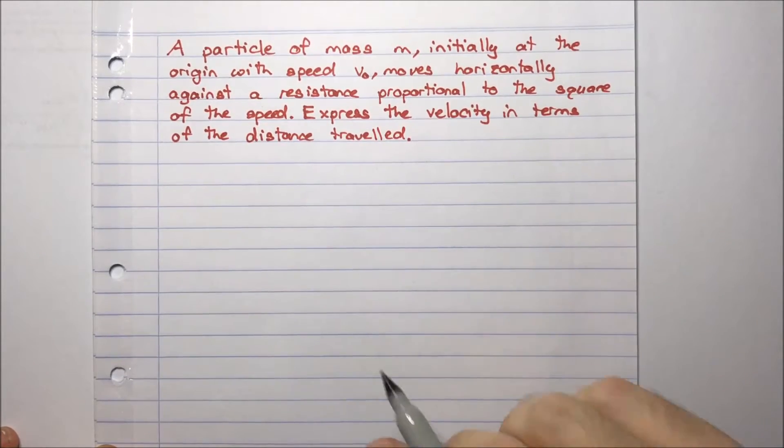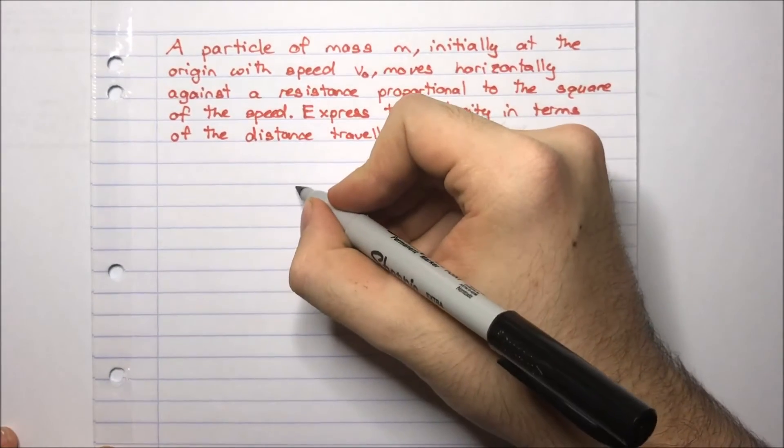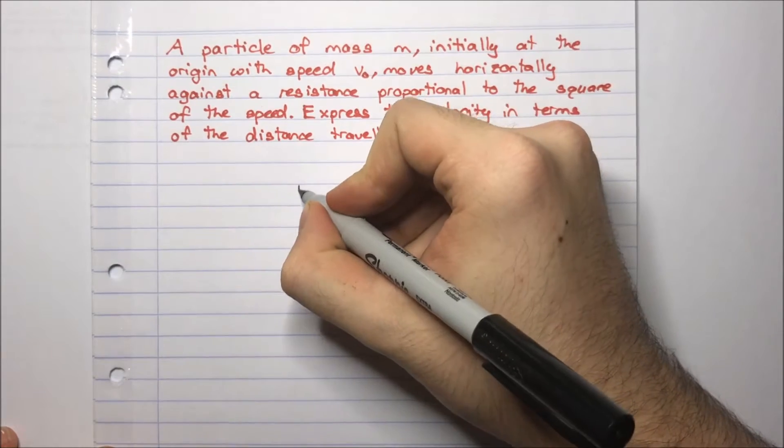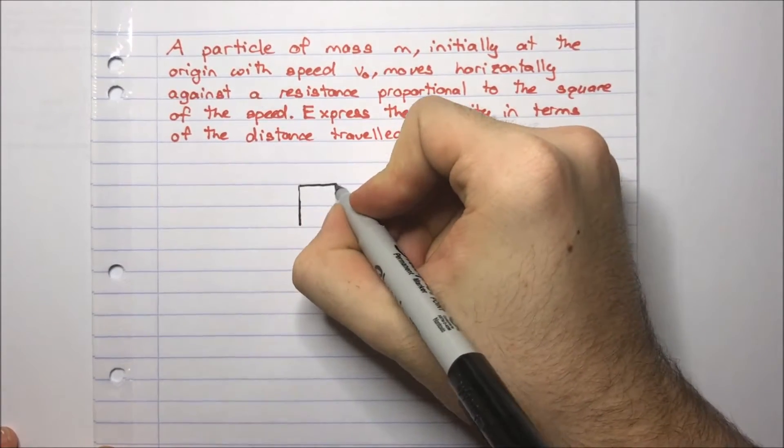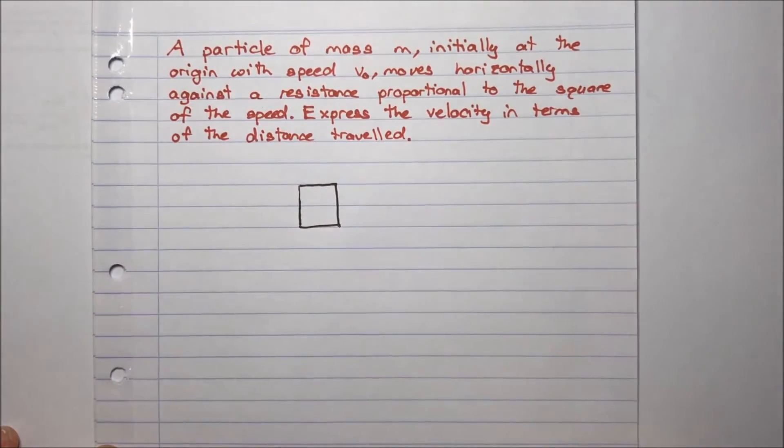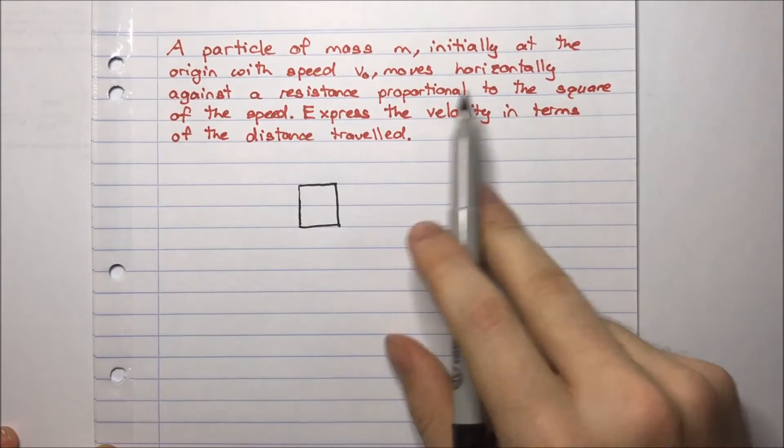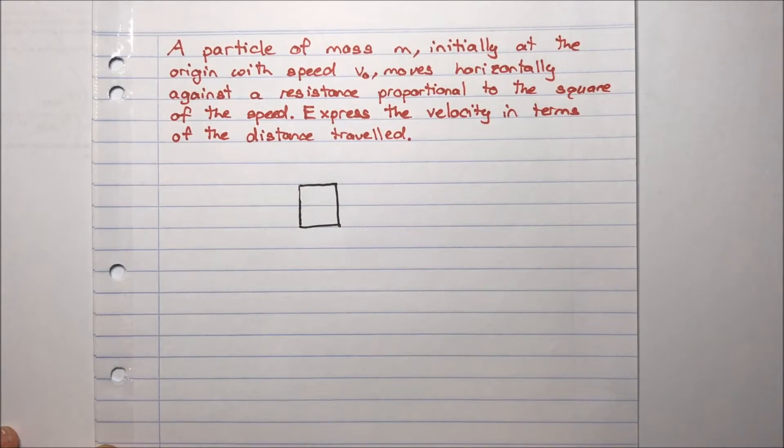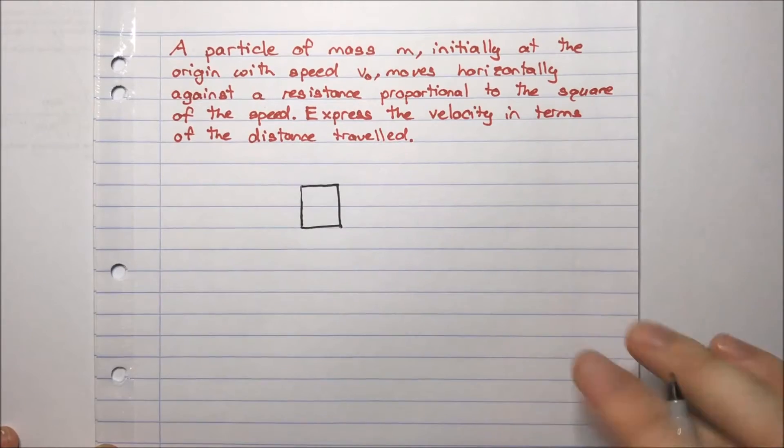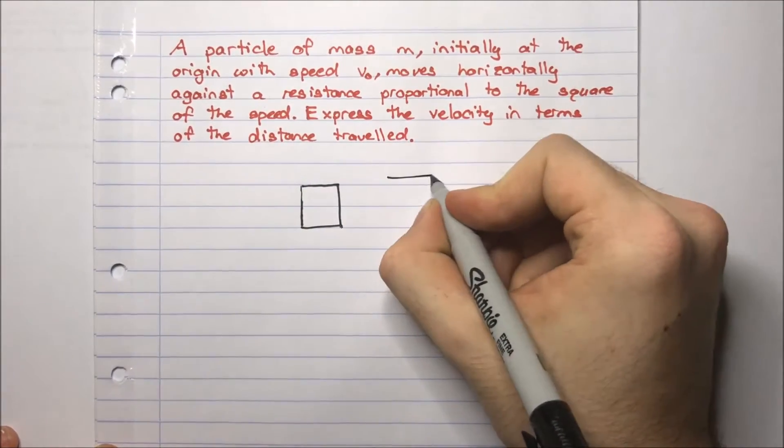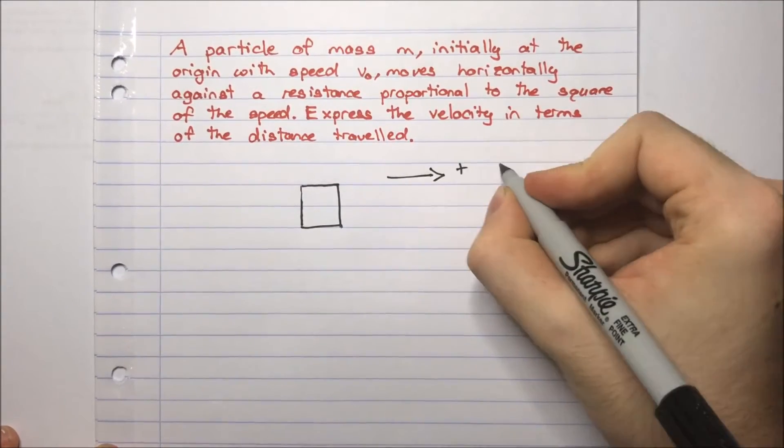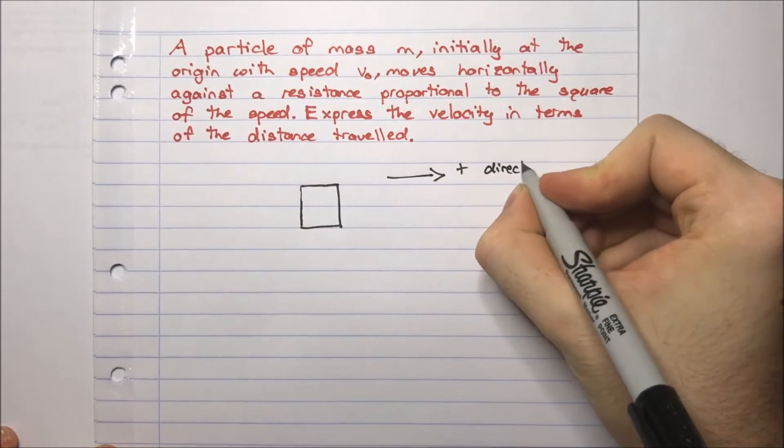So here we're looking at a mass. Let's get a diagram going. Some sort of a mass. It's moving initially at the origin with speed v, moves horizontally against a resistance proportional to the square of the speed. So let's define a direction of motion. Let's call this the positive direction of motion.